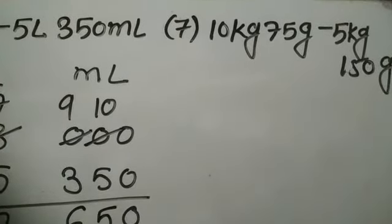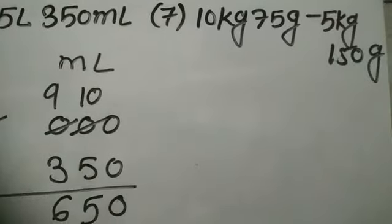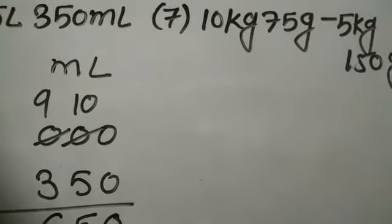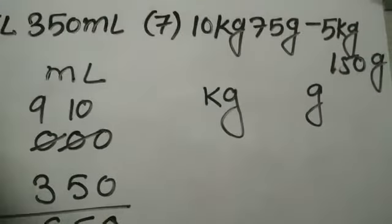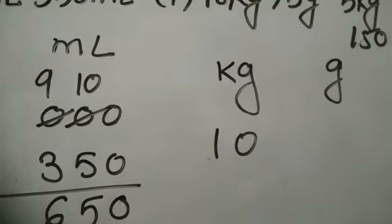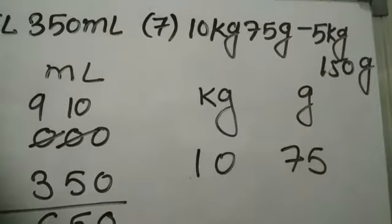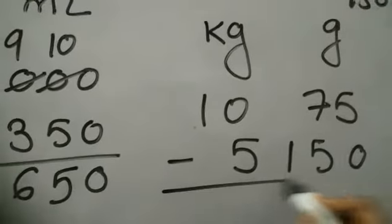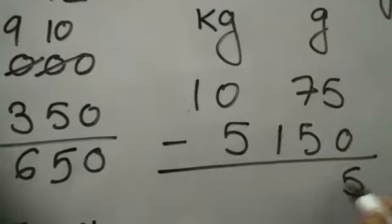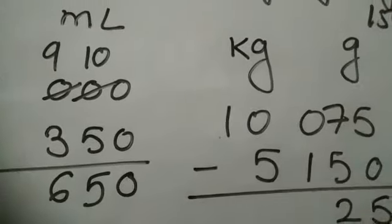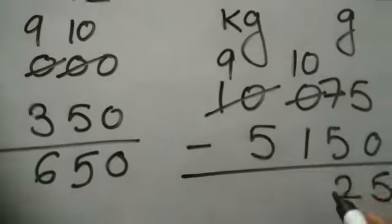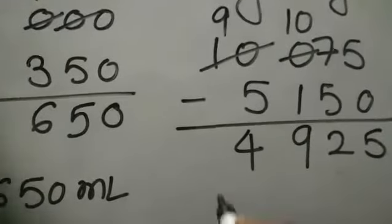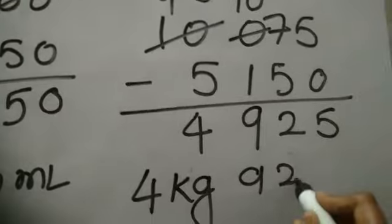Now the 7th example: 10 kg 75 gram minus 5 kg 150 gram. Here the units used are kg and gram, so I am making 2 columns. The first is of kg and the second is of gram. 10 I am writing in the first column, 75 gram in the second column. Then minus 5 kg 150 gram. Now let us subtract. 5 minus 0 is 5. 7 minus 5 is 2. As there is no digit we can write 0 here. We cannot subtract 1 from 0, so we take borrow from 10. So it will be 9 and this will be 10. Now 10 minus 1 is 9, 9 minus 5 is 4. Hence the answer is 4 kg 925 gram.